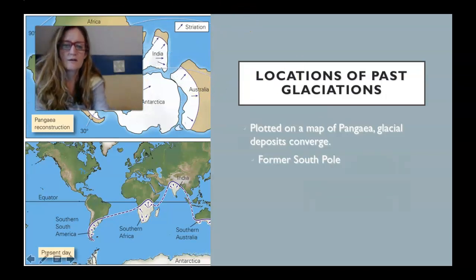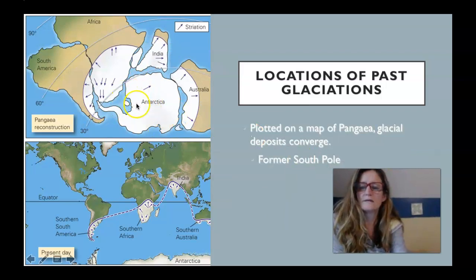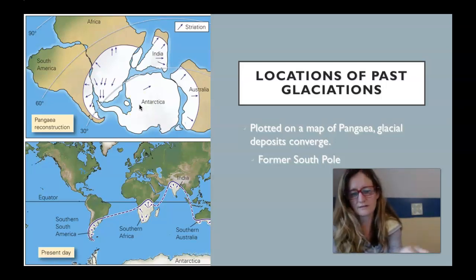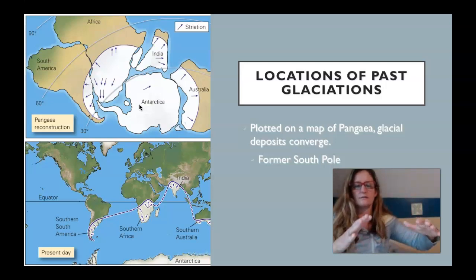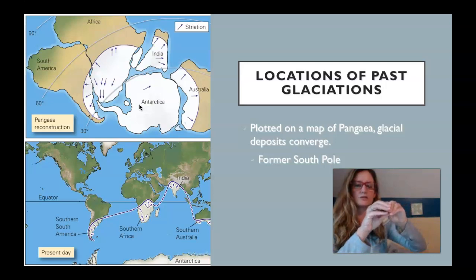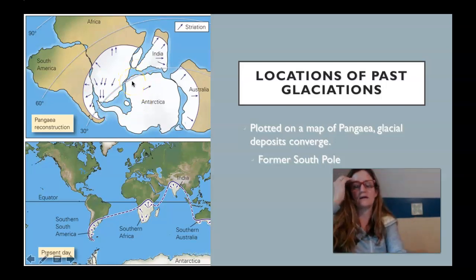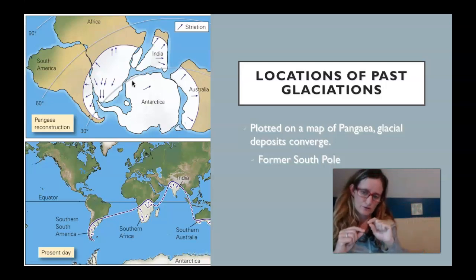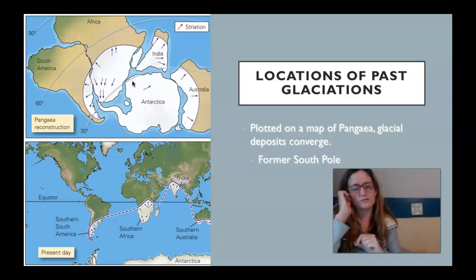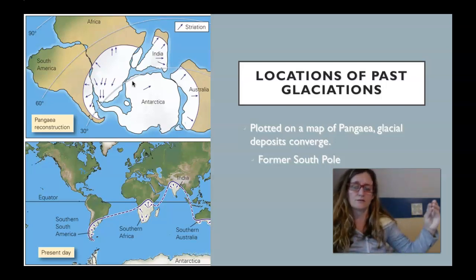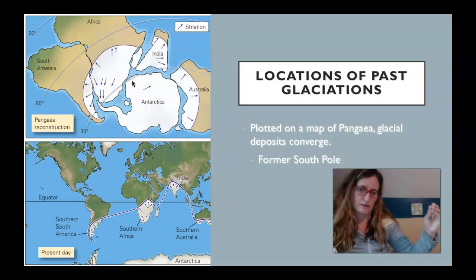Here's what that image looks like. The glaciation was centered around Antarctica. Glaciers are moving bodies of ice — on continental ice caps they spread out from a central point. You can imagine a central point with glaciers spreading outward from Antarctica. Matching up the striations, which show the direction of ice movement, and dating that time, showed that the continents matched up during Pangaea time.